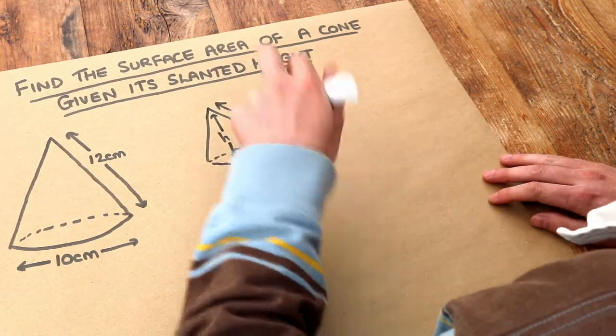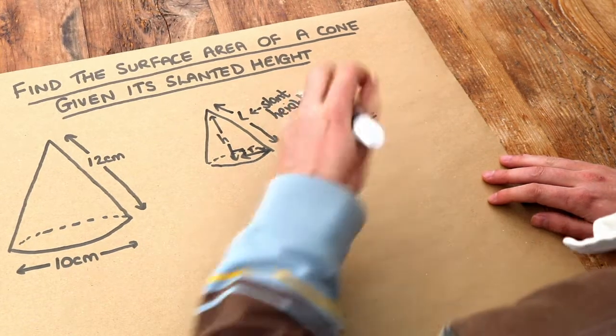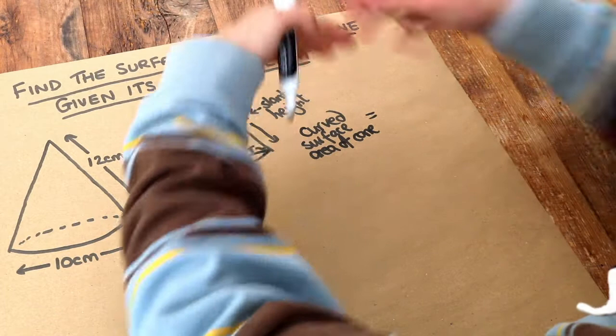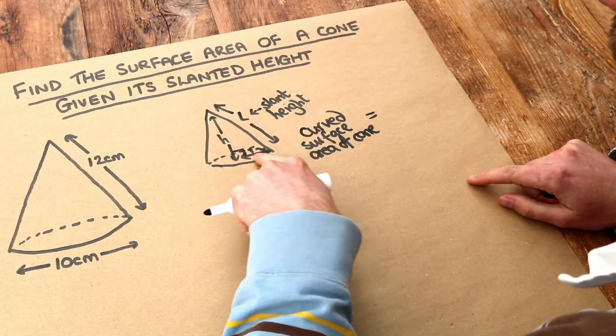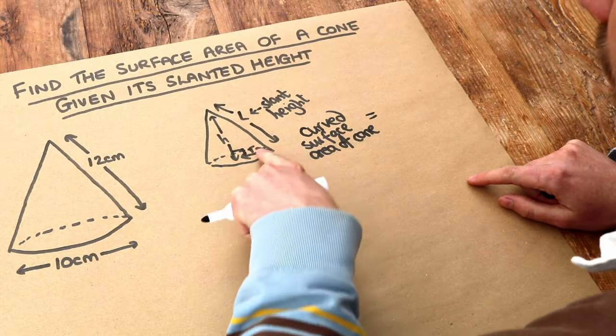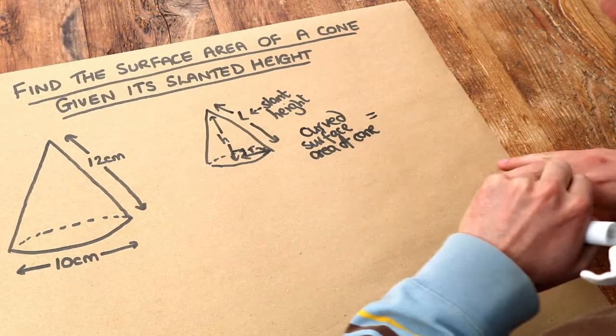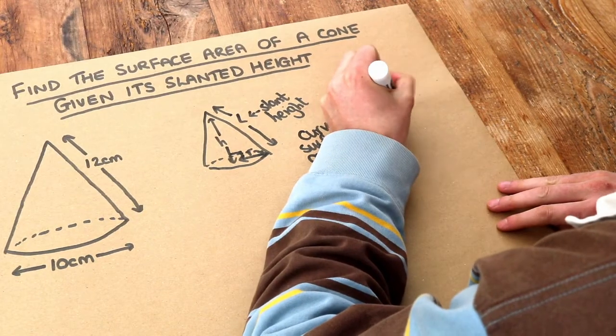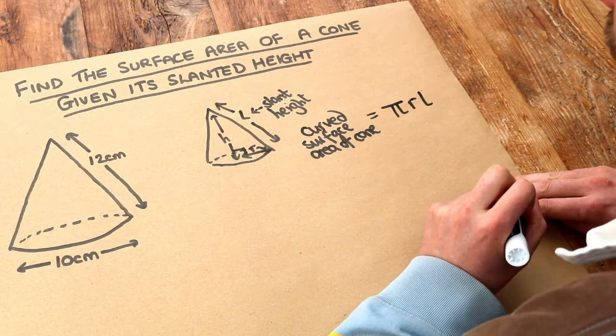If you've got the slant height, the curved surface area of the cone refers to this top bit here because it curves around. The bottom is not curved because it's flat. The formula for curved surface area is pi times the radius times the slant height: π × r × l.